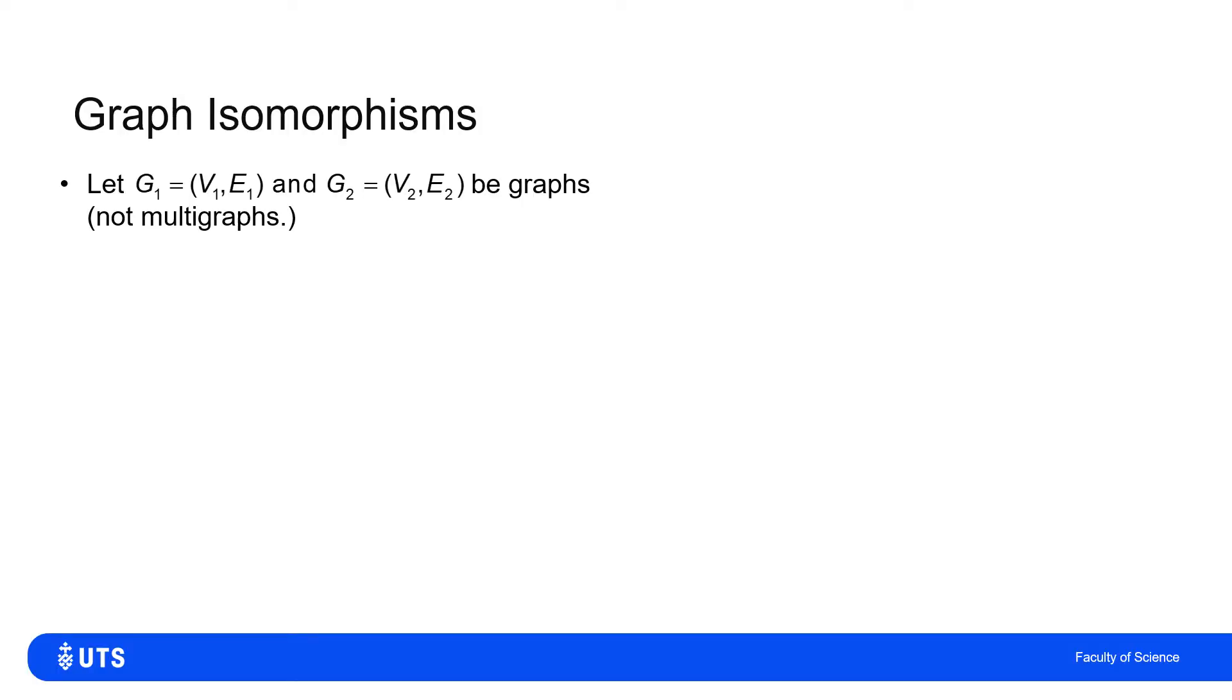Consider now two graphs, not multi-graphs, so there's no multi-edges. So G1 has nodes V1 and set of edges E1, and G2 has set of nodes V2 and set of edges E2.